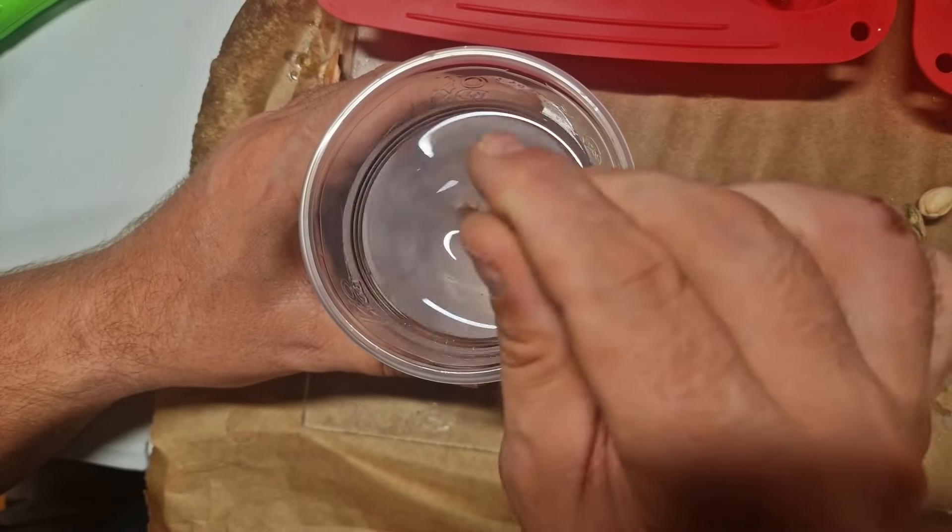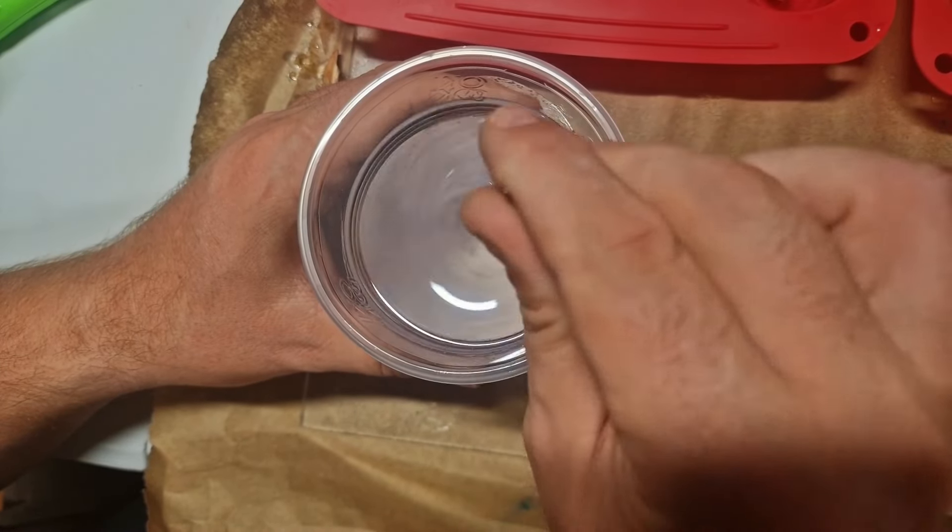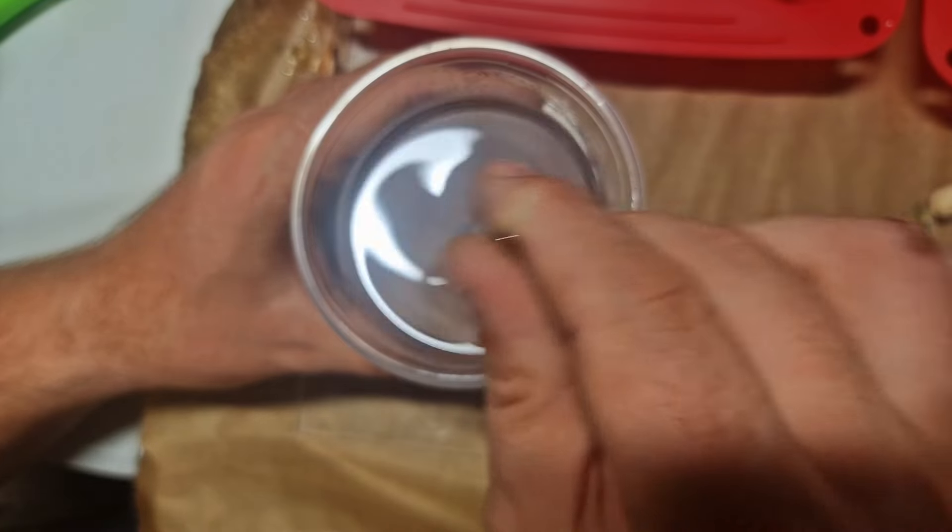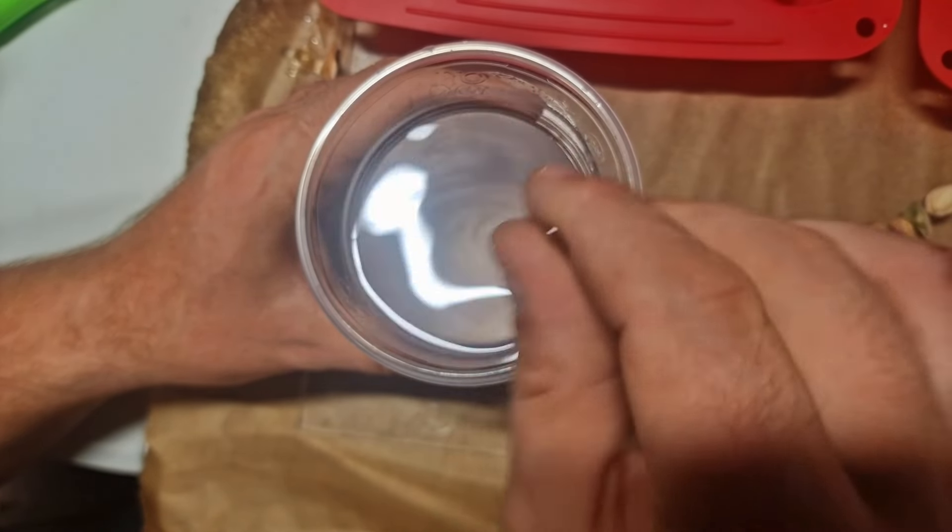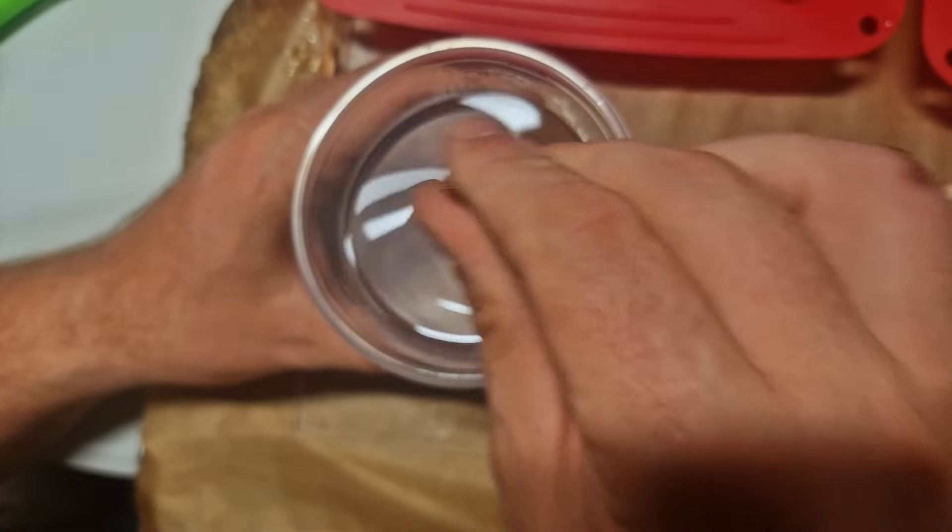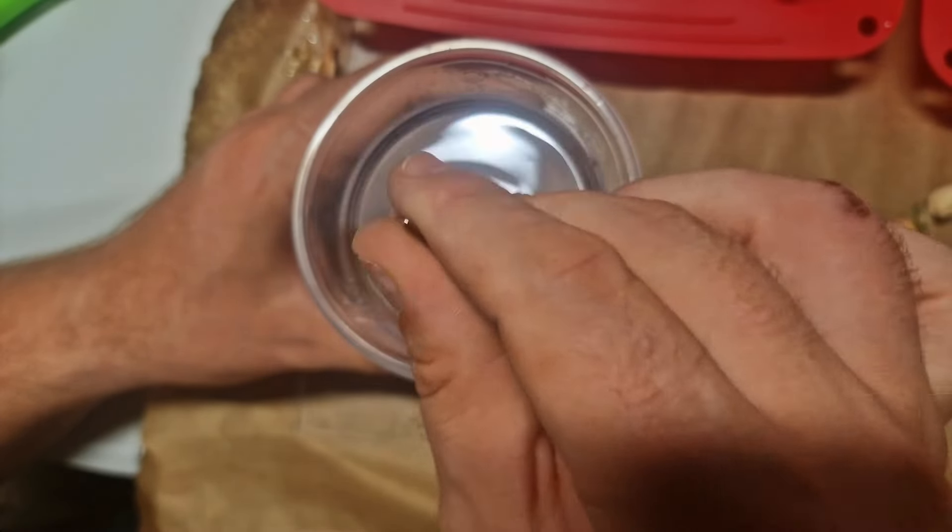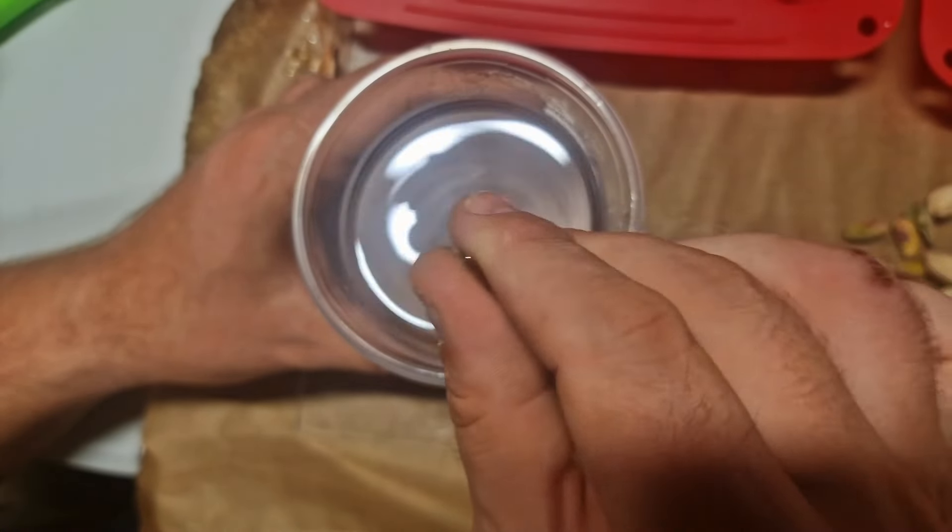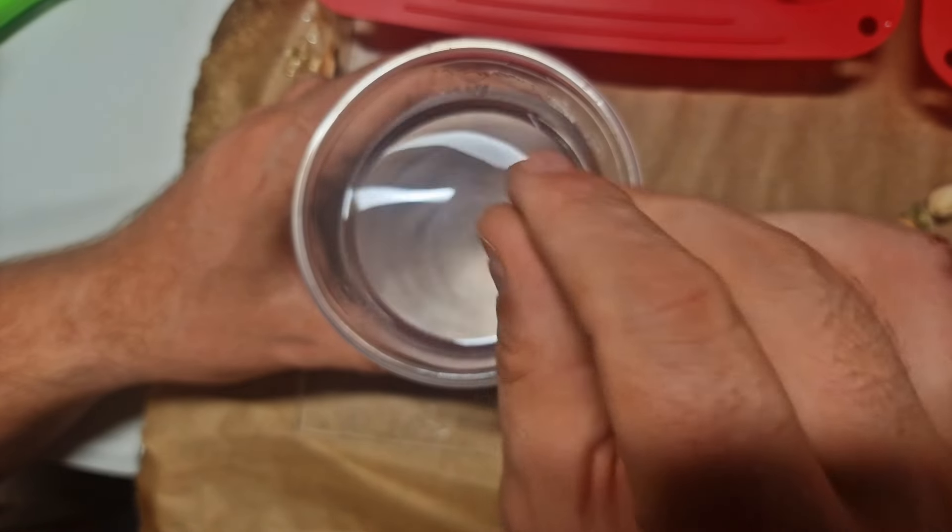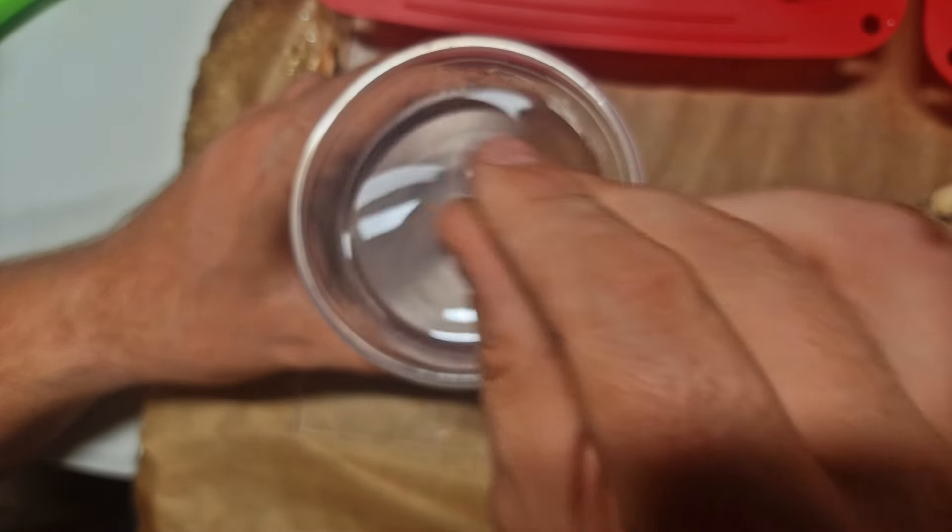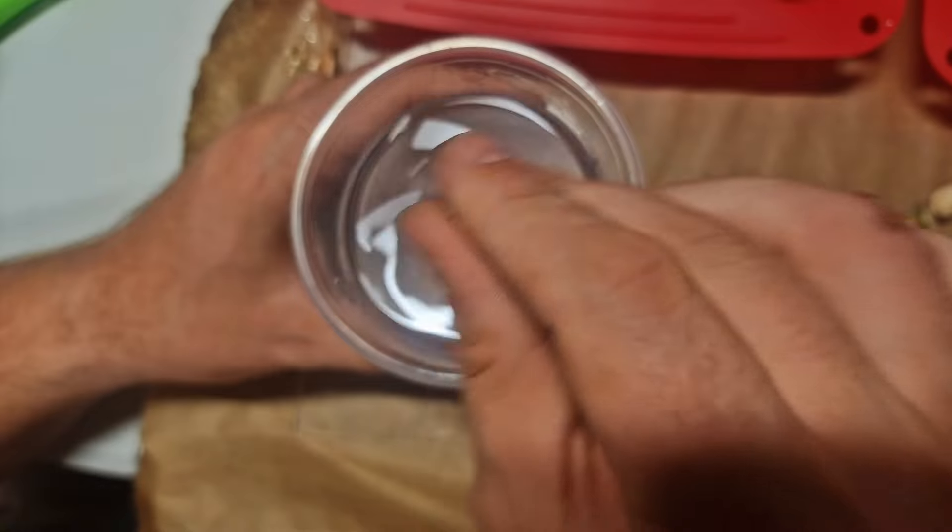Now when you mix the two parts together you are not creating a third chemical with the mix, we're just putting the molecules of part A next to part B's molecules. That's all you need to do, that's all you are doing.